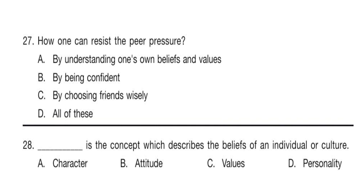Question 27. How can one resist peer pressure? The answer is option D: All of these. Question 28. Dash is the concept which describes the beliefs of an individual or culture. The answer is option C: Values.